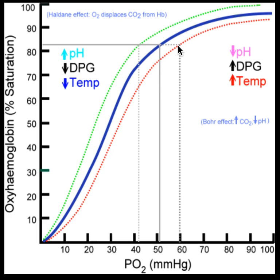We don't look at graphs that frequently in daily life, but that's really what a right shift means. A right shift fixes the wrong — that's kind of how I remember it. The "wrong" is that the pH is getting too low, the temperature is getting too high, and DPG is being produced, meaning the metabolic rate is really high. So if hemoglobin is in a region where metabolic rate is too high, you shift the curve to the right, which makes it easier to release oxygen and fixes all these problems. A right shift fixes a wrong.